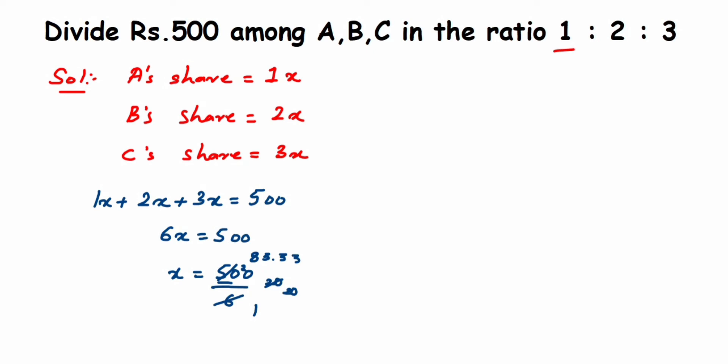If this cancellation is confusing, you can just do a normal division on the other side. We got x value here, which is 83.33. Therefore, x = 83.33.